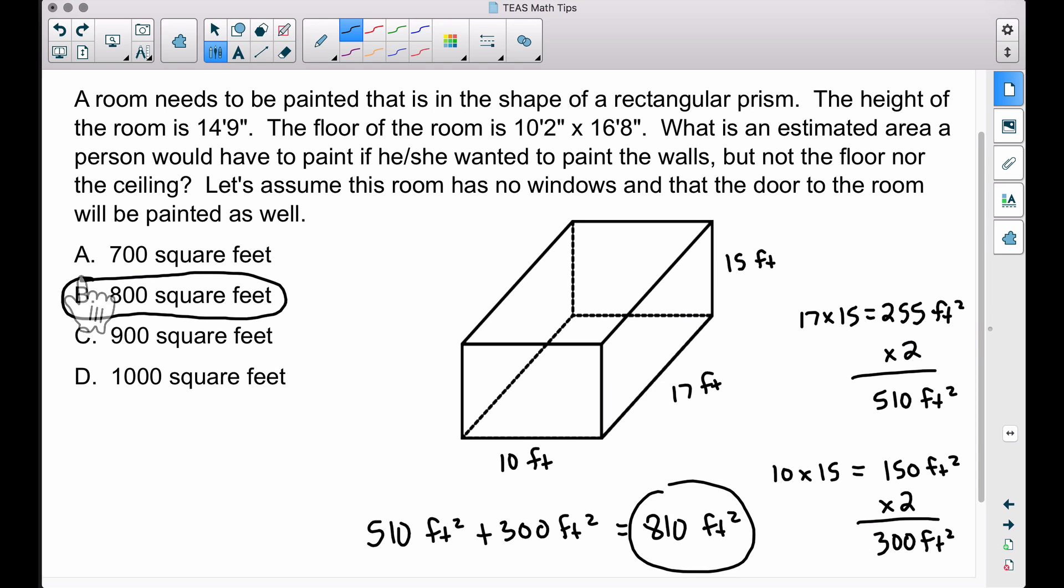If you look at the answer choices in the study manual, you'll see there's a big enough difference between all those square feet answers such that one is definitely the obvious choice. Don't stress too much about estimating versus rounding. Once we found the areas of all four walls and got 810 square feet, that's pretty close to 800 square feet. Had we got 860 square feet, we would have chosen 900 square feet.